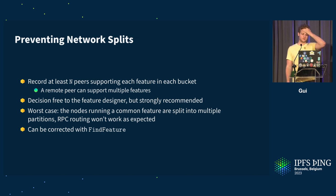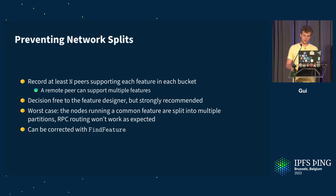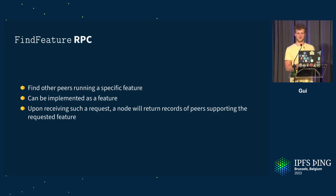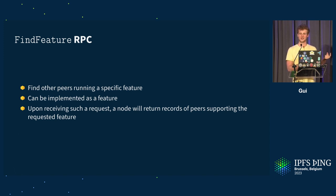In the worst case, nodes running a common feature could be split into sub-partitions, but we can correct that with a find-feature mechanism. Basically, when you join the DHT network using any bootstrapper and don't yet know any nodes running your feature, you can send random queries asking: do you know someone using IPFS? Once you find someone, you fill your routing table and converge to a stable state. This can be implemented as a feature.